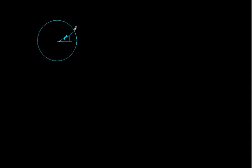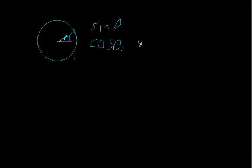Then the height of this point right here — if this angle is theta — the height of this point is sine theta. Because that's just how high it is at that point. And the distance away, right here, is cosine of theta — that's just the x coordinate. So the coordinates of that point are cosine theta, sine theta.